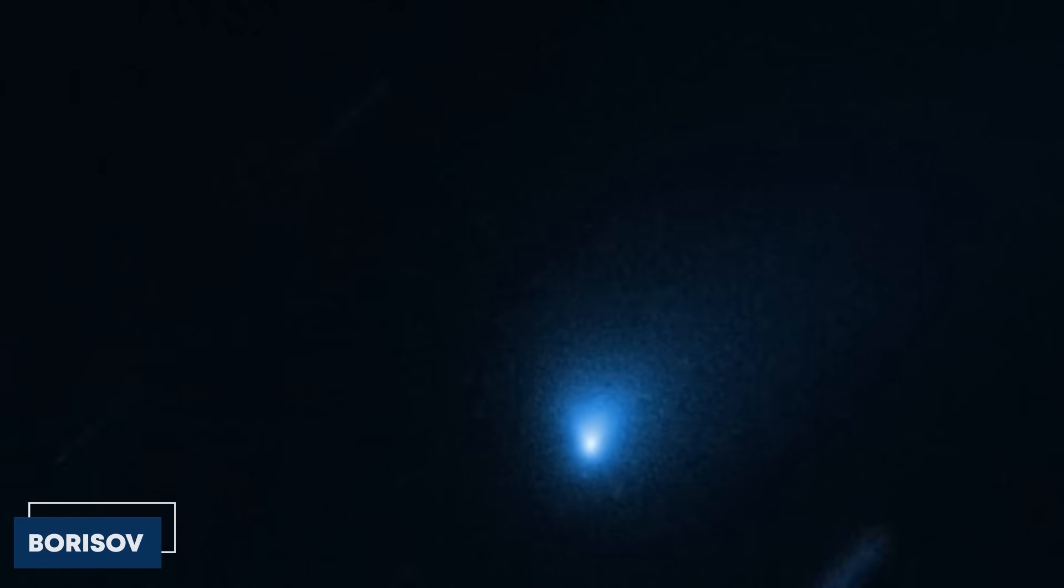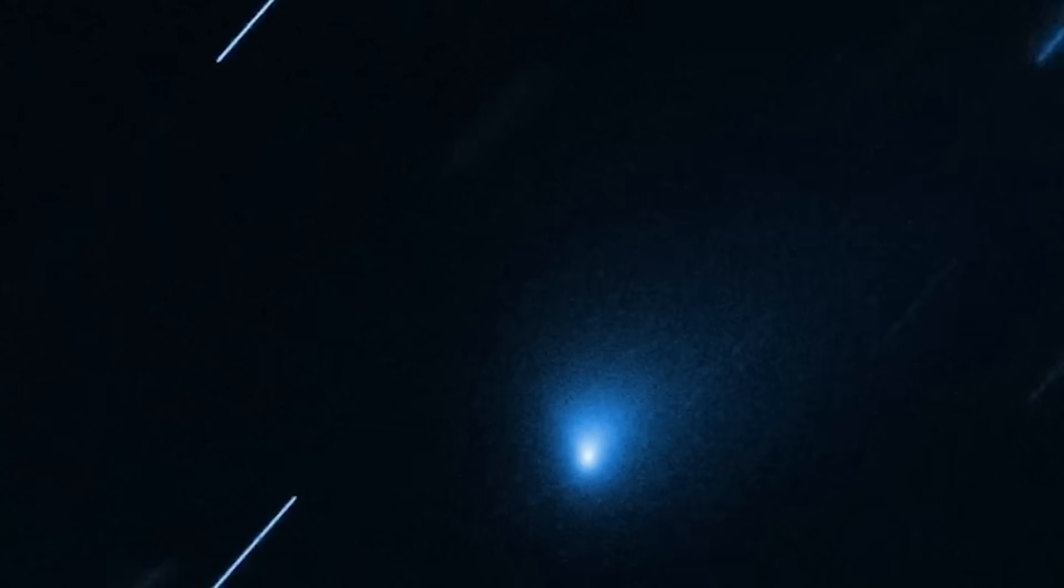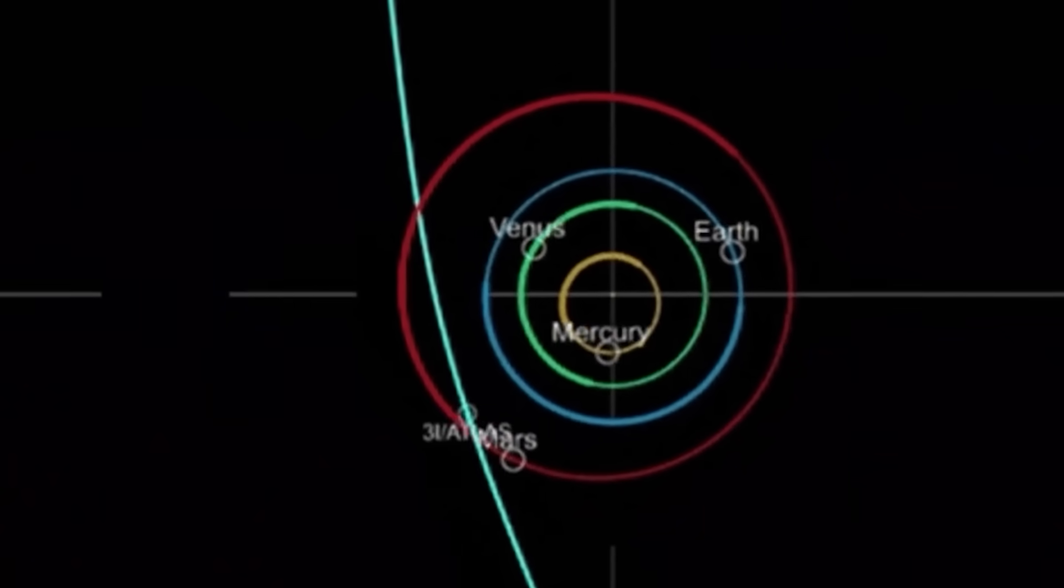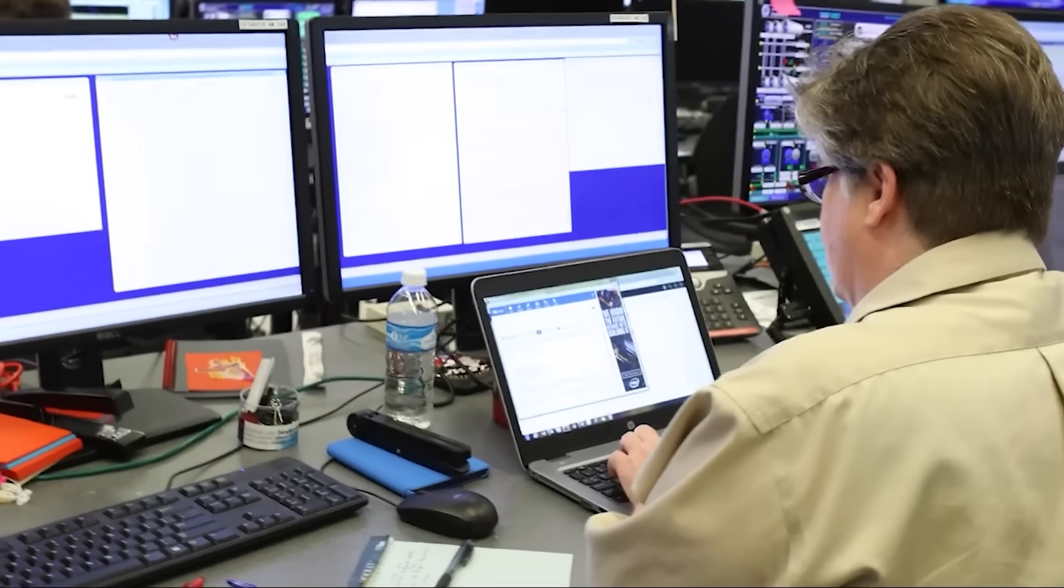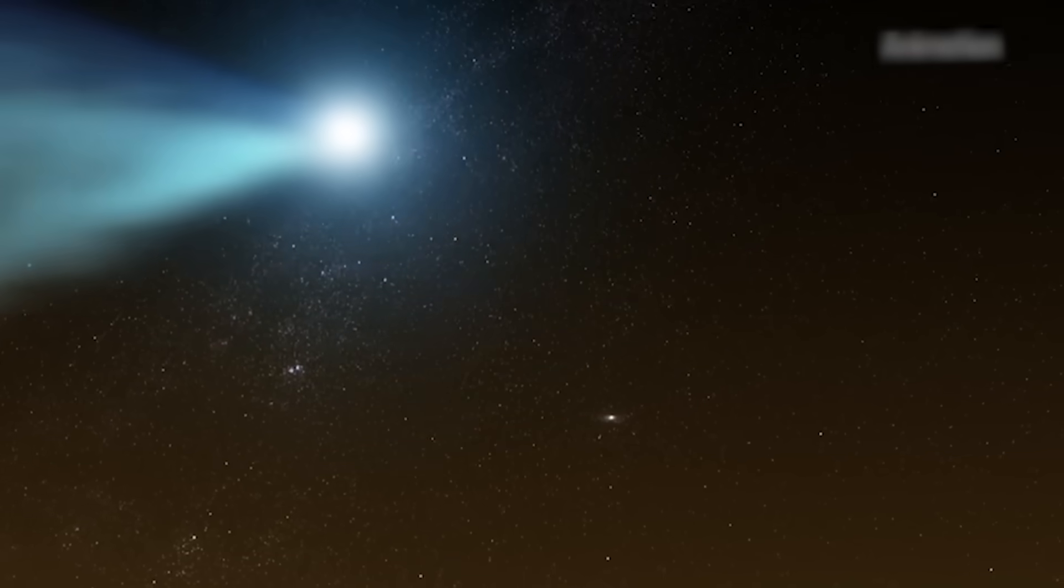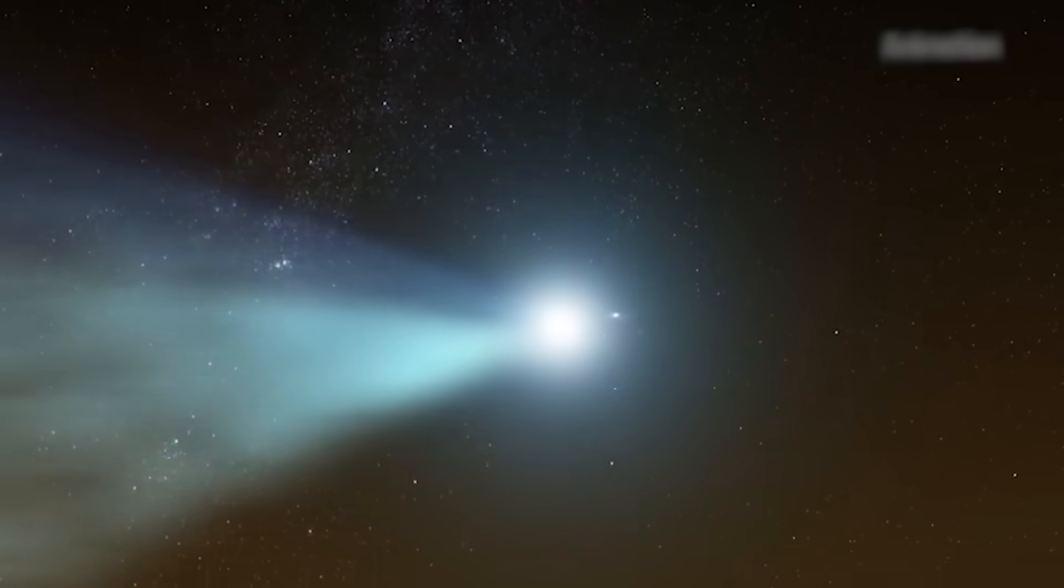The second visitor, Borisov, achieved 32 kilometers per second during its 2019 flyby. 3i Atlas dramatically outpaces both predecessors, establishing itself as the swiftest interstellar wanderer we've ever documented.